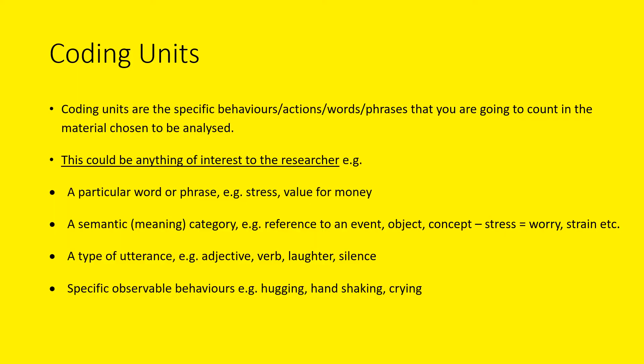Coding units are the specific behaviours, actions, words, or phrases that you're going to count in the material chosen to be analysed. A coding unit might be a particular word or phrase like 'stress' or 'value for money.' It could be a semantic category — relating to the meanings of words in reference to an event or object. It might be a type of utterance such as an adjective, verb, laughter, or silence, or specific observable behaviours like hugging, handshaking, or crying. The coding units will depend on what you're studying and should be operationalised so they are objective, not subjective.